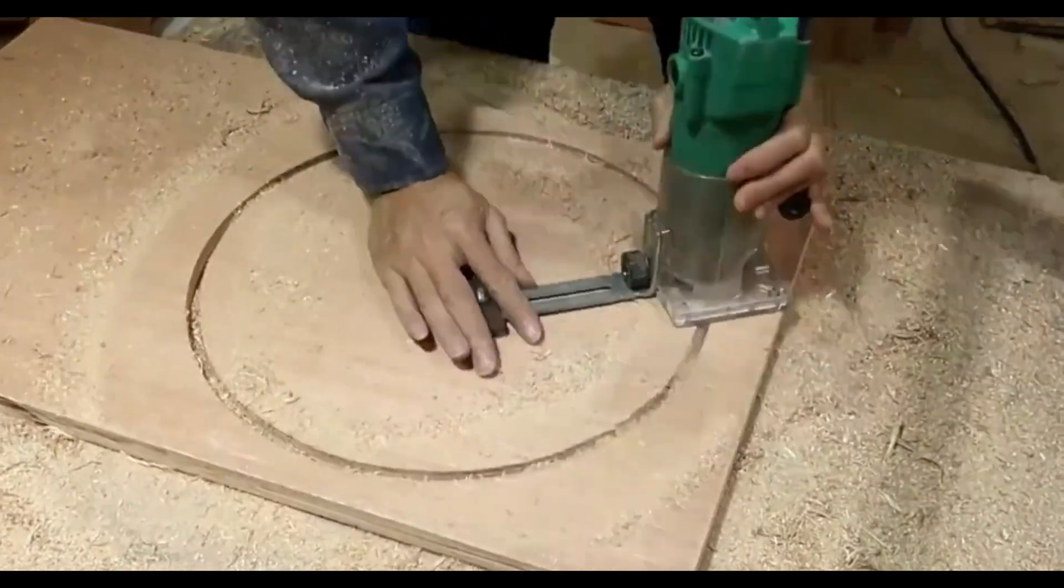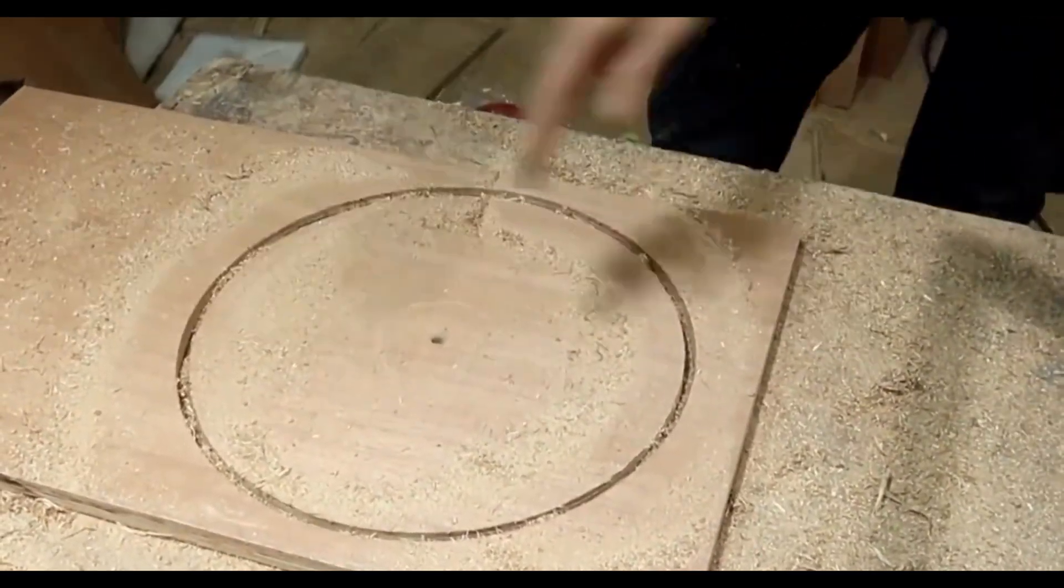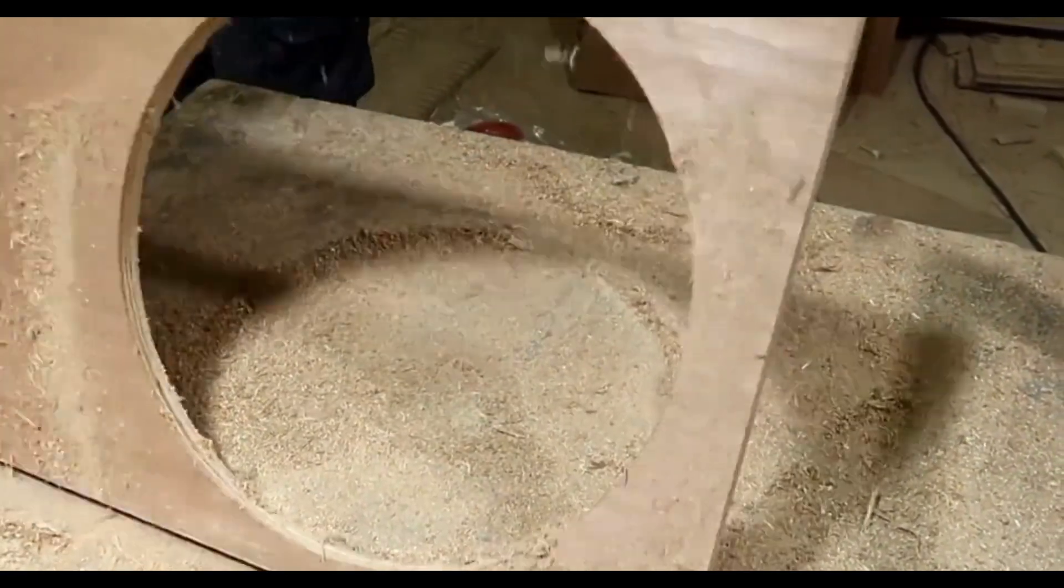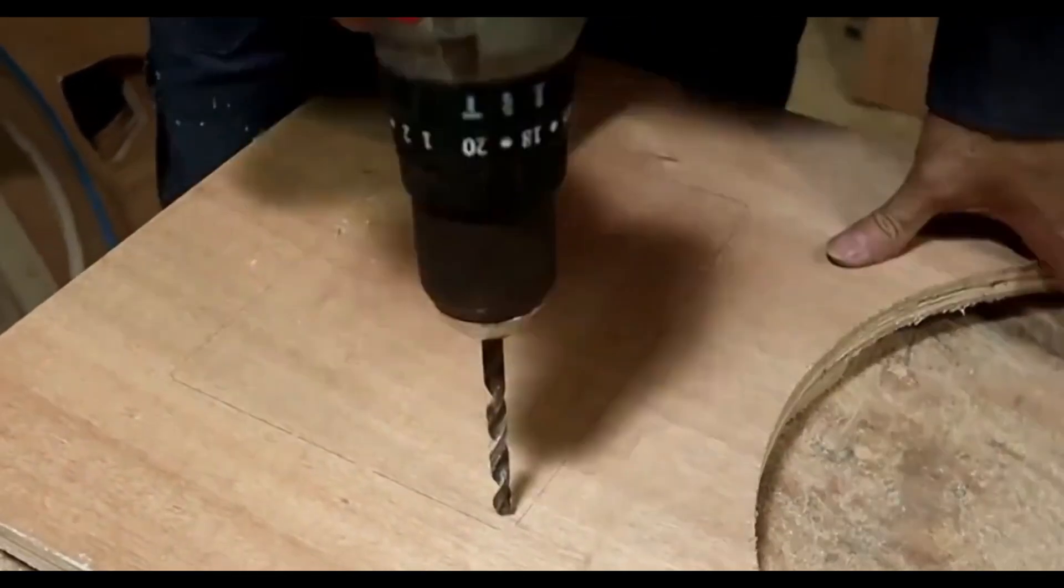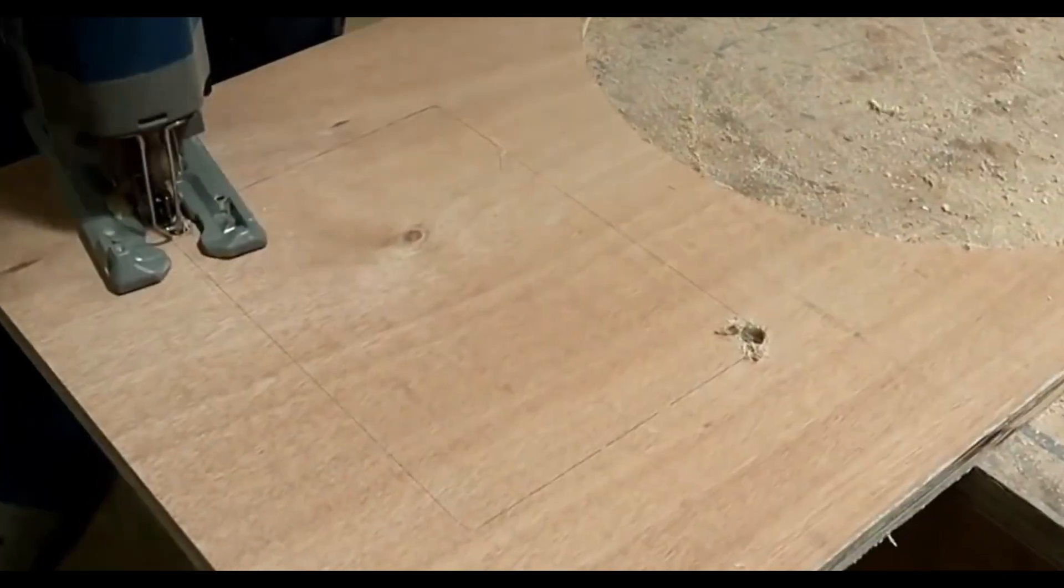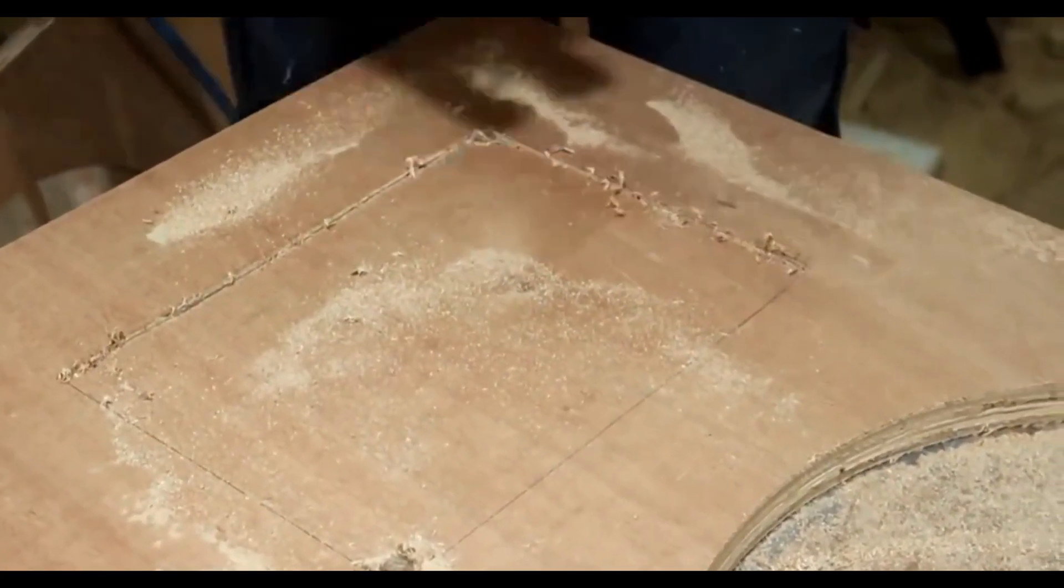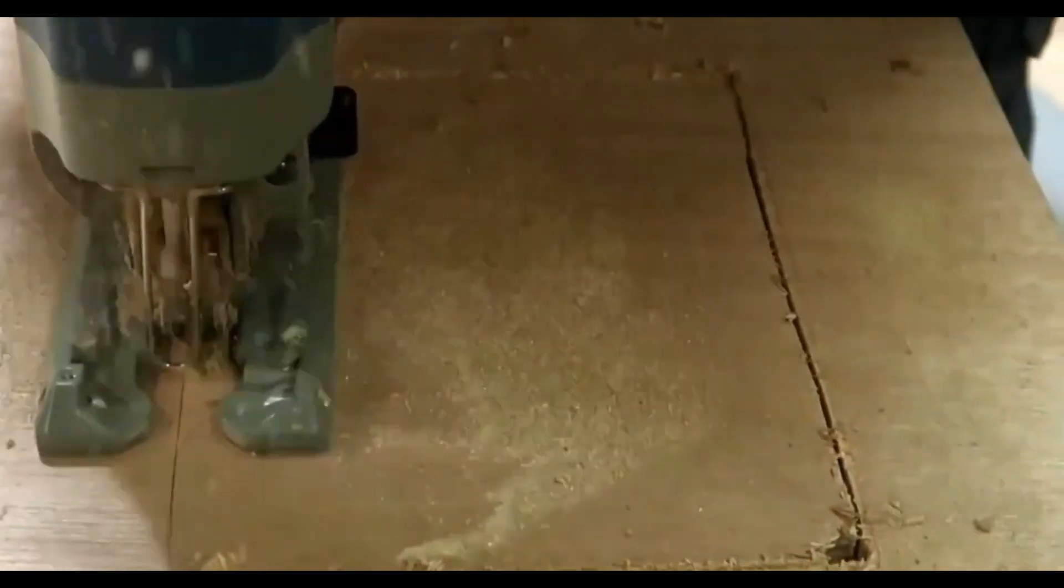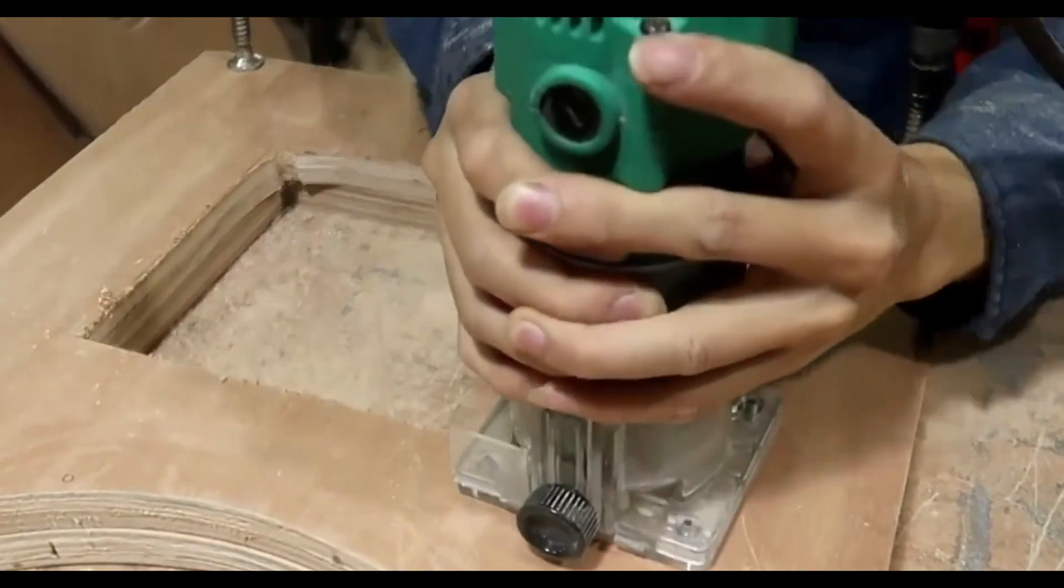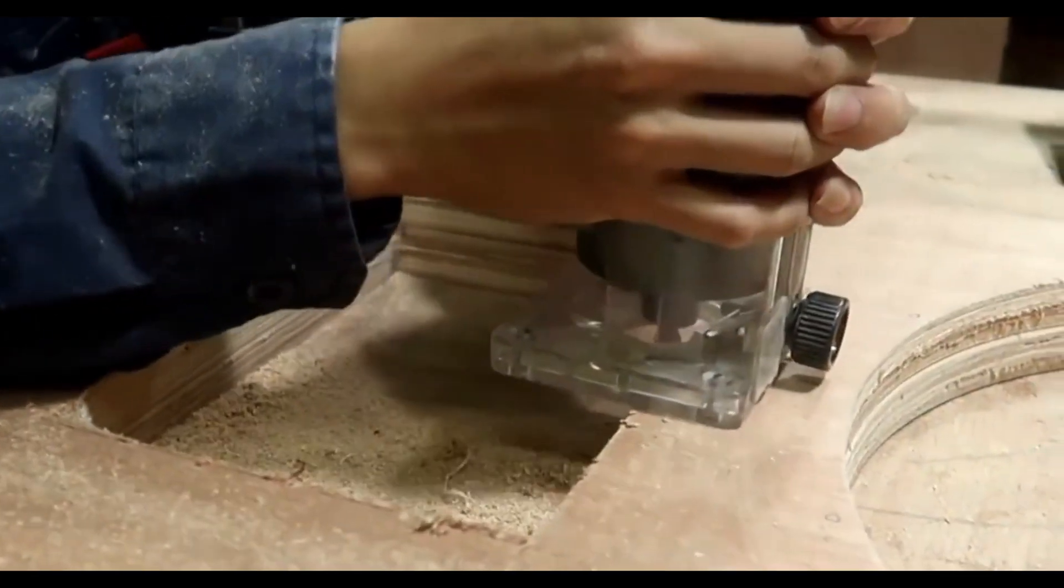Step 1: Prepare materials and tools. First you need to prepare the required materials and tools. Materials include quality timber boards of suitable size, speaker units, audio electronic components, glue, screws, etc. In terms of tools, you will need electric drills, saws, files, grinders, rulers, etc.